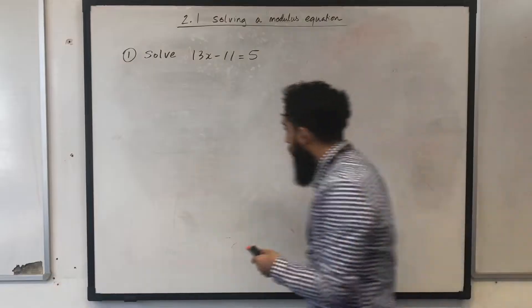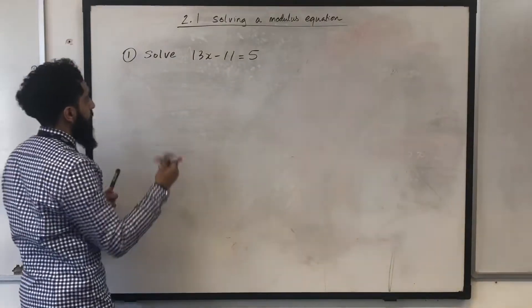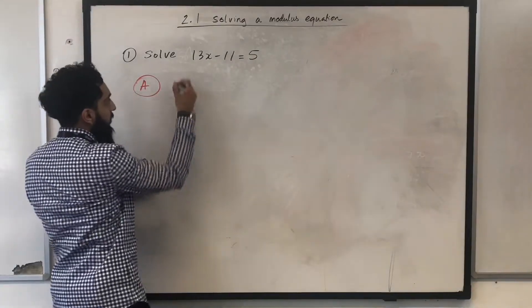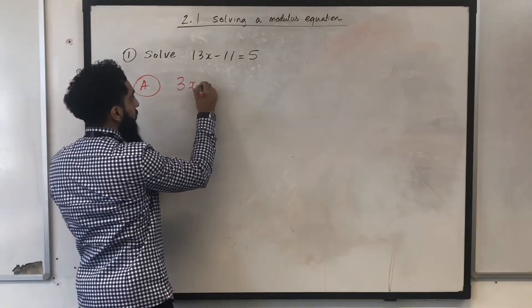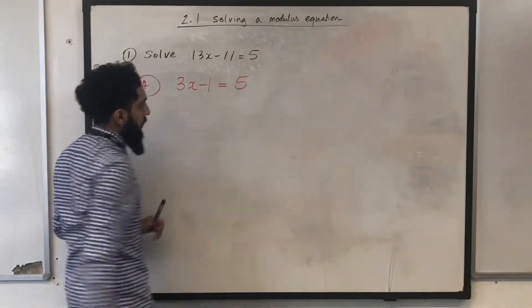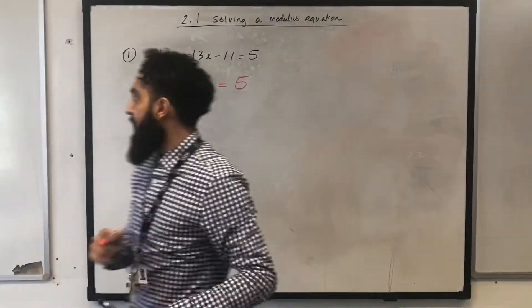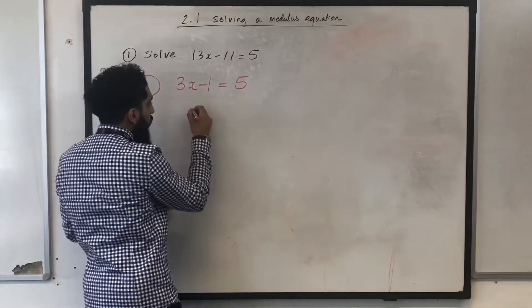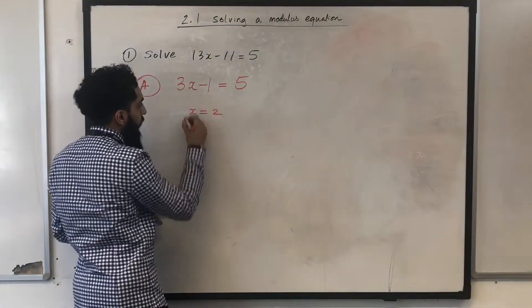Let's form the first equation. The first equation will just be whatever you have inside the modulus, so 3x-1 equal to 5. Now, you solve this equation as normal, and after solving, you get x equal to 2. That is your first solution.